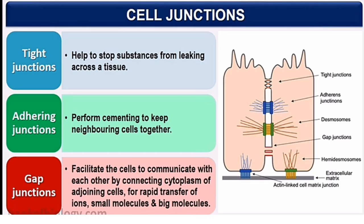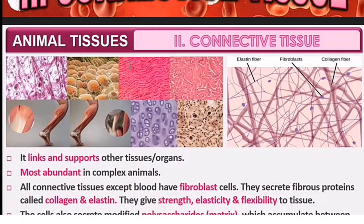Junctions between cells are like joining pieces together. Cells have different types of junctions: tight junctions, which are so tight they stop leakage — because leakage in cells can cause dangerous diseases; adhering junctions, which act like cementing between cells; and gap junctions, which allow communication and rapid transfer of ions and molecules, whether small or large.